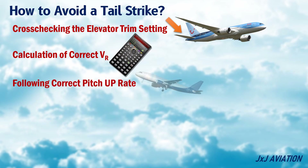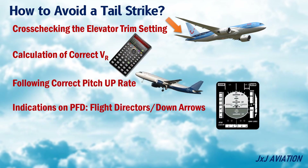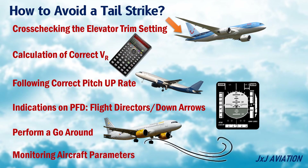Additional practices to avoid a tail strike include following the correct pitch-up rate, using indications on the PFD such as flight directors or down arrows to avoid excessive pitch, performing a go-around if unstabilized during approach, and monitoring aircraft parameters during approach in case of crosswinds and gusts.